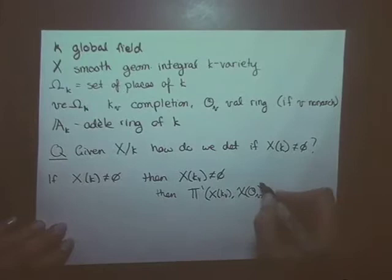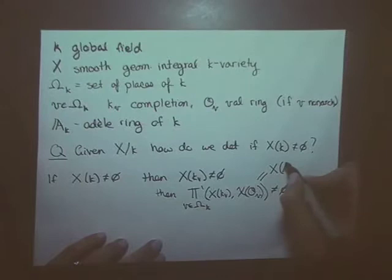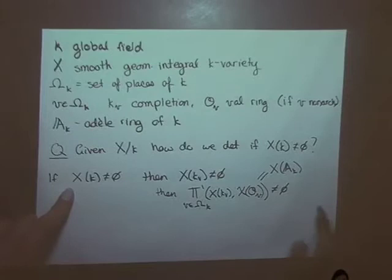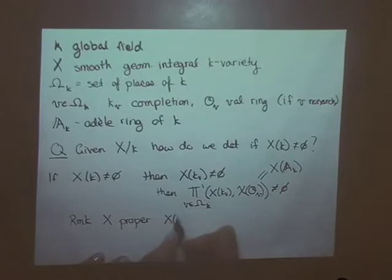You take the product over all places, and it's an exercise in the Janevitus exercise set that this restricted direct product is the same as the set of adelic points of X. So another way to rephrase this: if you have a K-rational point then you have an adelic point. If X is proper, then you don't need the restricted direct product — you just take the product of all of the K_v-points.